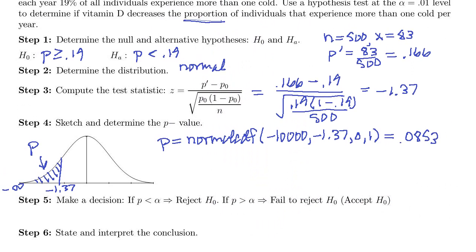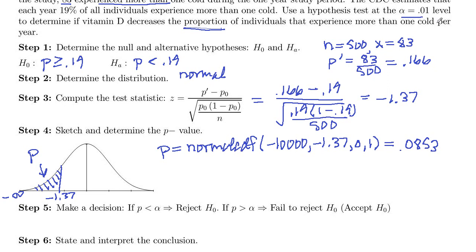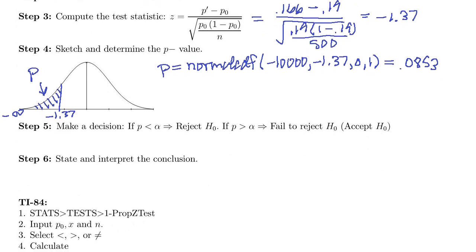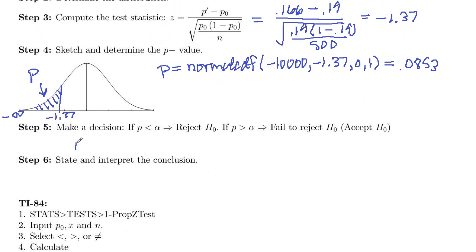Now we compare that to our alpha. Alpha is 0.01. So our p, which is 0.0853, is greater than 0.01, which is our alpha. So we do not reject H_0.